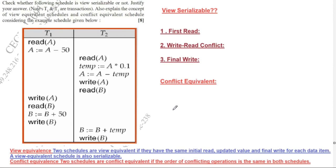In this video we are talking about transactions. The question is we have to find the serializable, view serializable, and conflict equivalent schedule. The schedule is given with transactions T1 and T2. We will first check the conflict equivalent schedule.